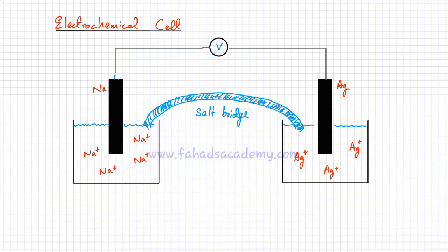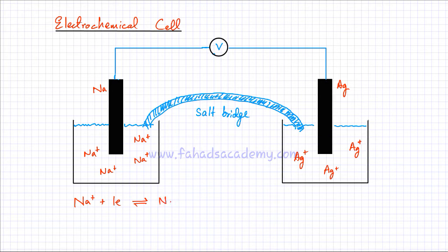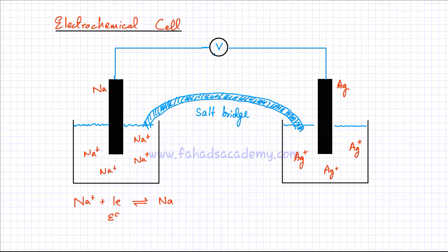In the following lecture, we're going to discuss an electrochemical cell. An electrochemical cell is made up of two electrodes — different types of electrodes that we just studied previously. Here I've taken a sodium-sodium ion electrode in which there's going to be a reversible reaction set up, where sodium ions would be gaining electrons to form sodium and vice versa — sodium in return would be losing electrons to form sodium ions back again. A reversible reaction would be set up, and this electrode is going to have a very specific E0 value, which in this case is minus 2.71 volts.